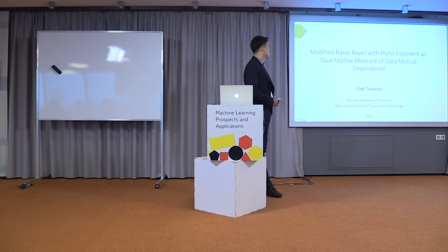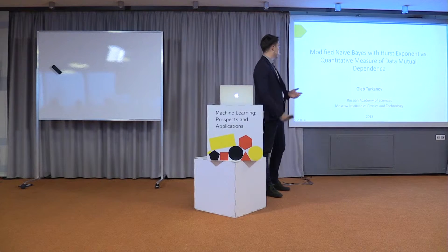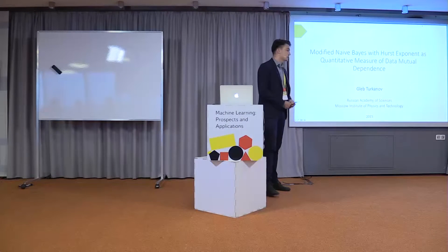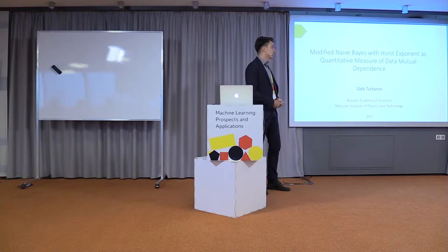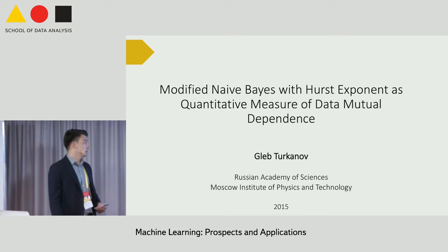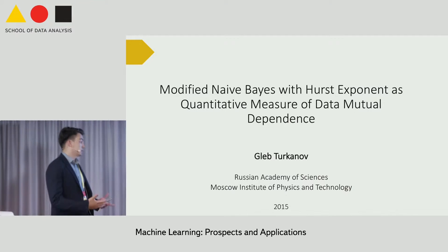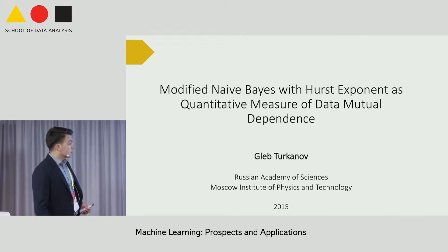Hello everyone, I'm Gleb Torkanov from the Russian Academy of Sciences at Moscow Institute of Physics and Technology. I want to thank you for the invitation and the opportunity to participate with my topic called Modified Naive Bayes with Hurst Exponent as Quantitative Measure of Data Mutual Dependence. In a few words, it's a Naive Bayes with information about data.